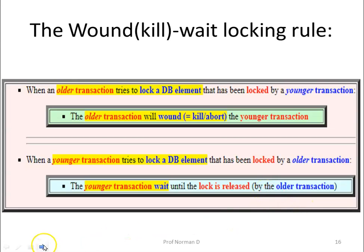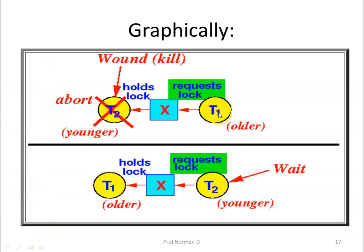Looking at the diagram: we have T1 (older) and T2 (younger). T2 is already holding a lock on database item X and T1 (the older transaction) is requesting a lock on X. In this case, T1 will kill or wound the younger transaction T2. In the second case, an older transaction holds a lock on X and a younger transaction is requesting a lock on the same item. Here, the younger transaction will be made to wait. This is how the Wound-Wait protocol works.